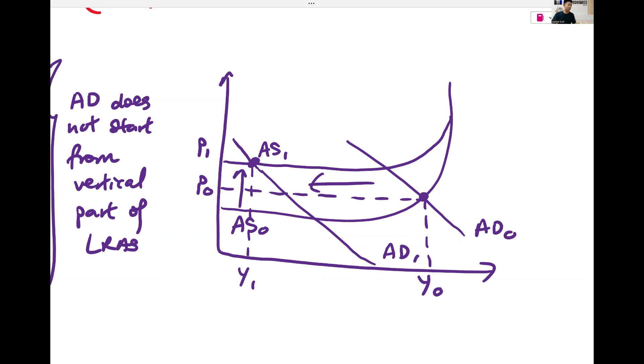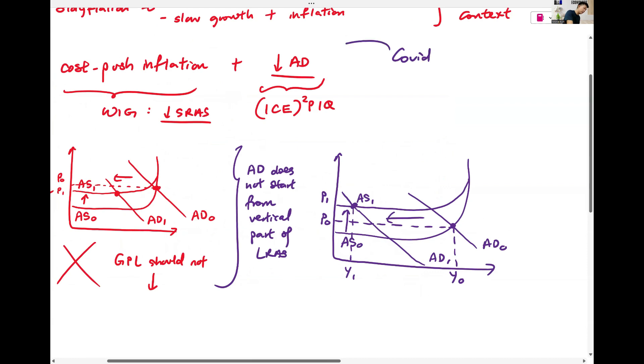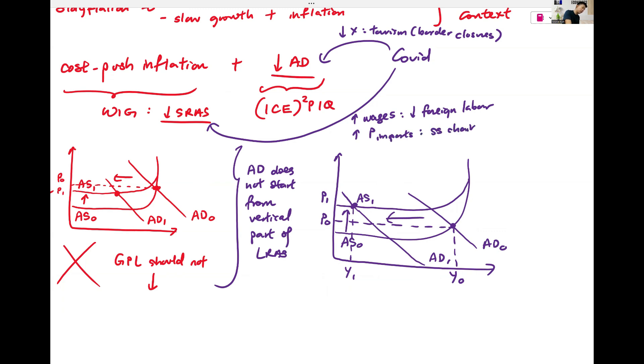COVID will lead to both outcomes. I think I talked about this recently. A fall in X could be because of lower tourism, because of border closures. Then a fall in SRAS could be because of higher wage-push inflation because you lose your foreign labor, or higher price of imports because of supply chain disruptions.